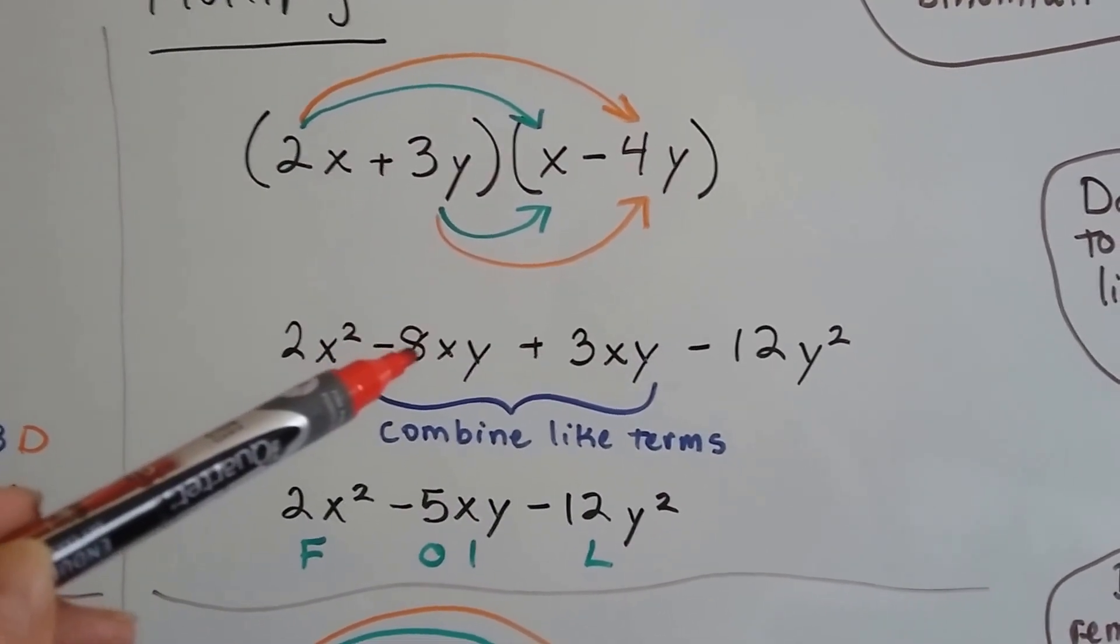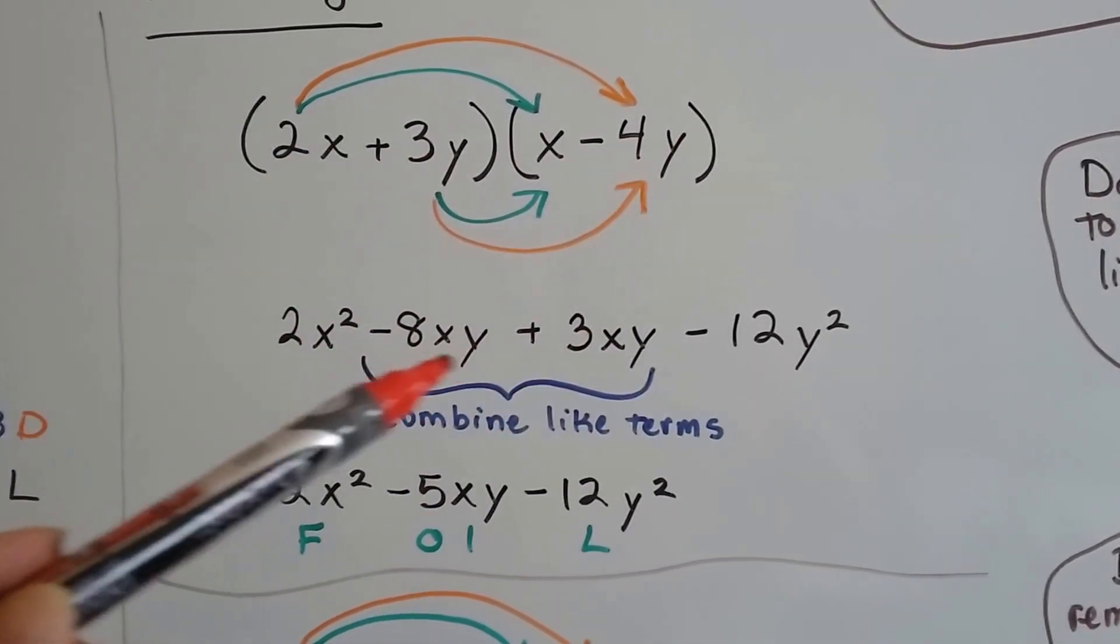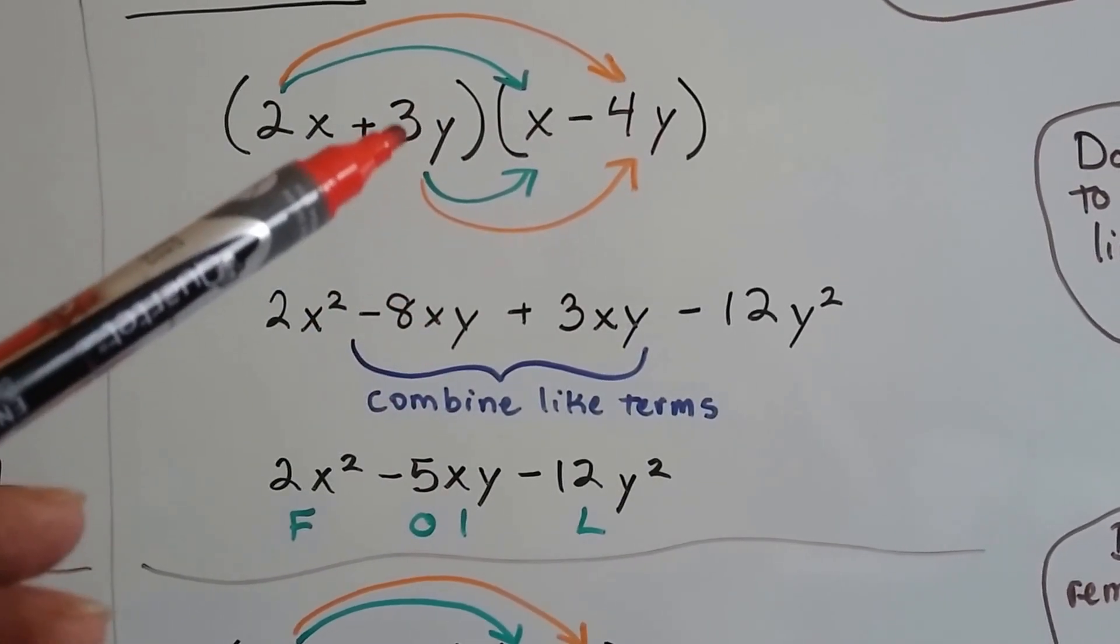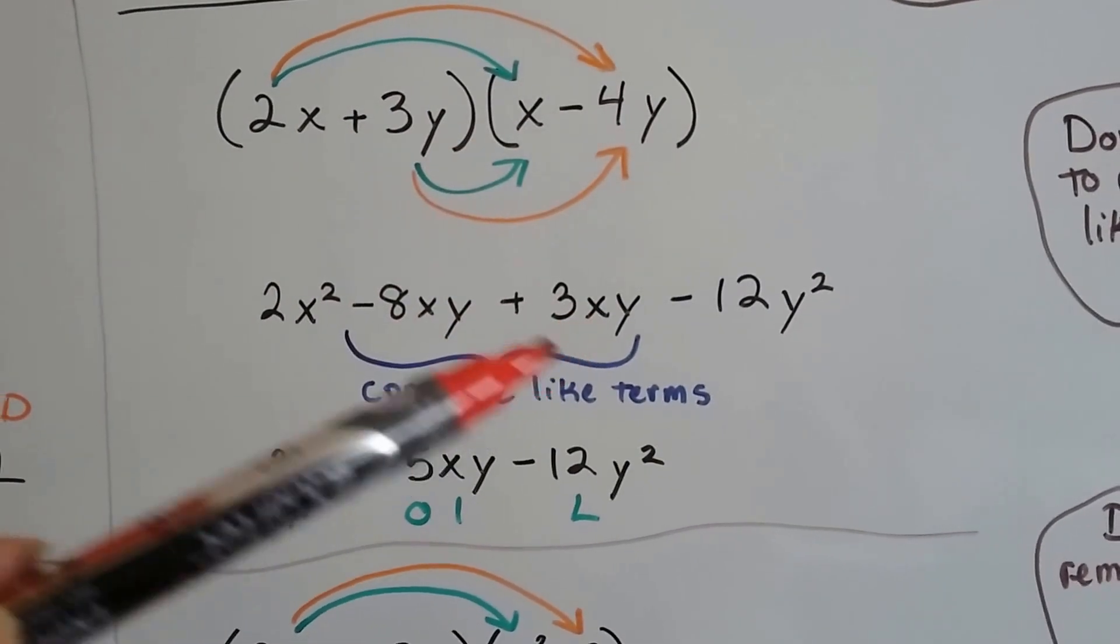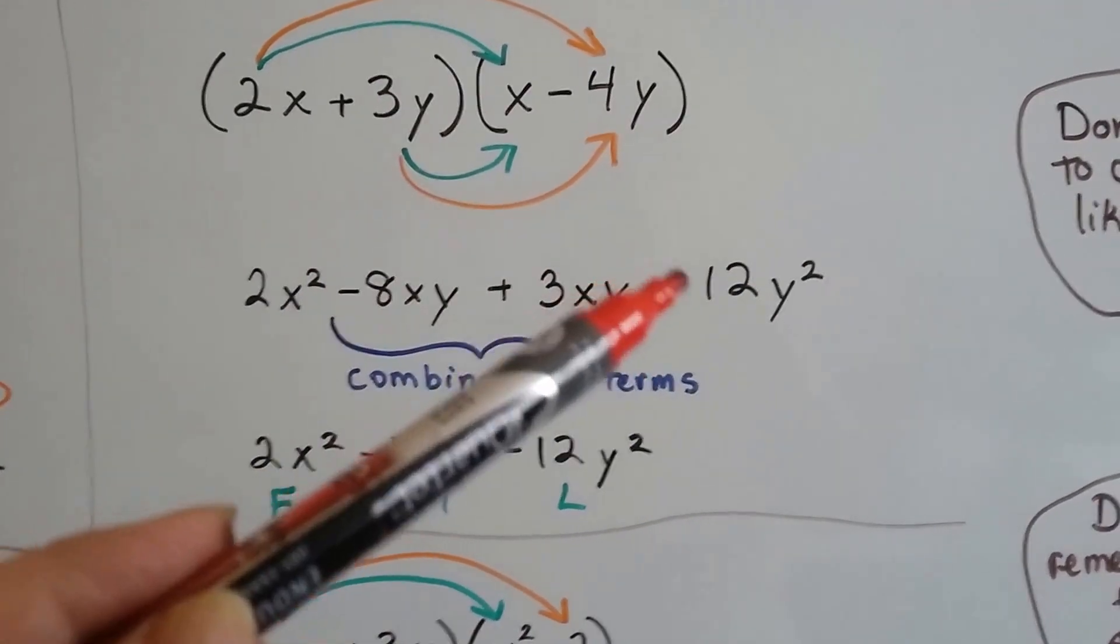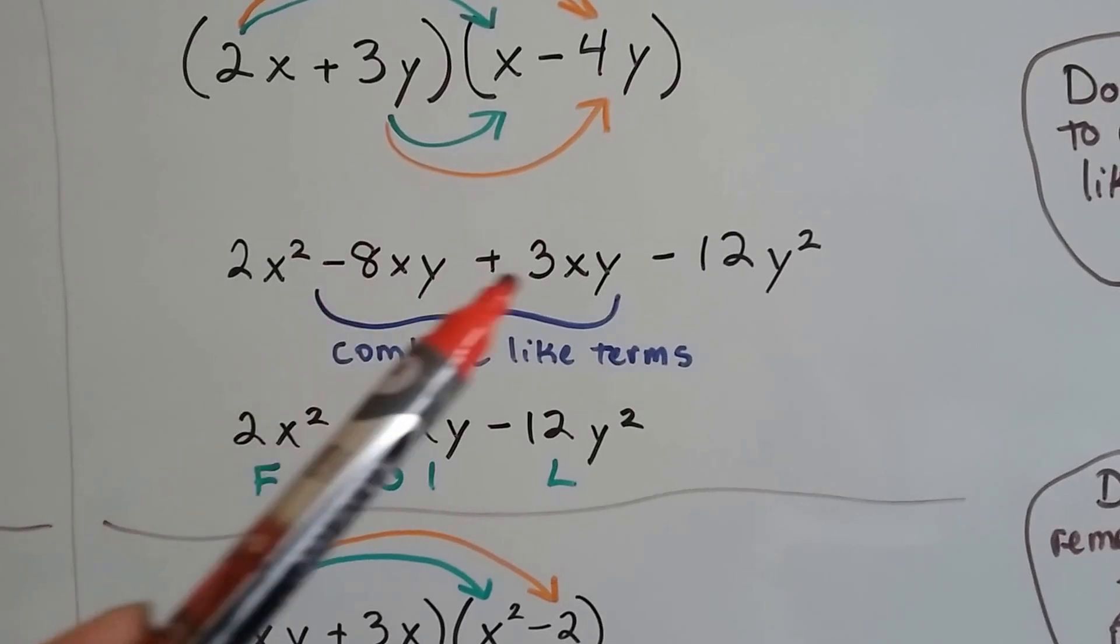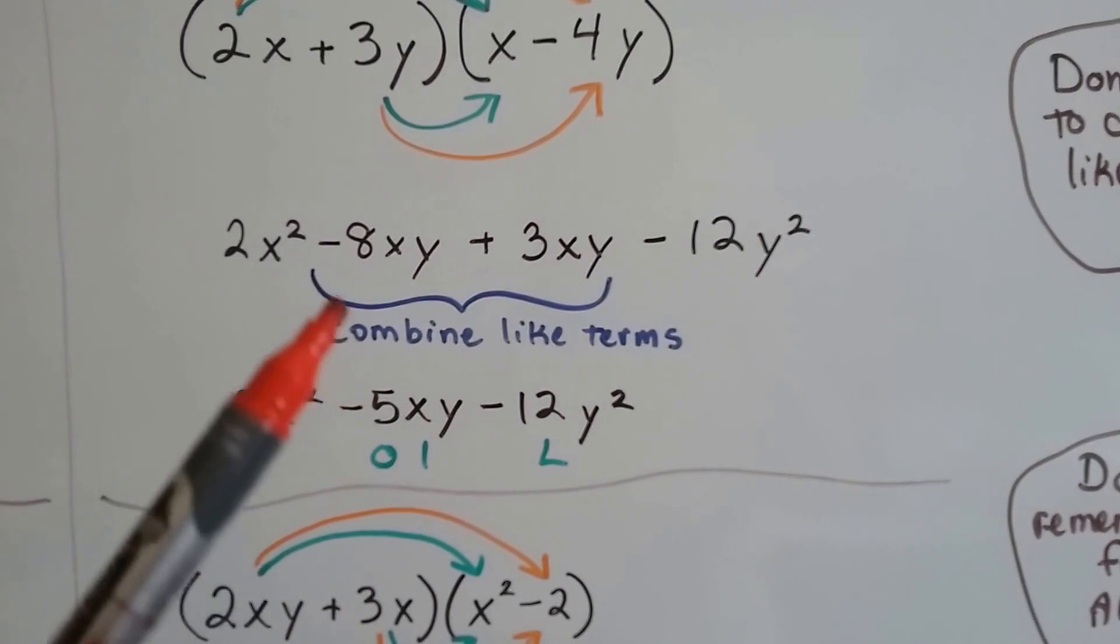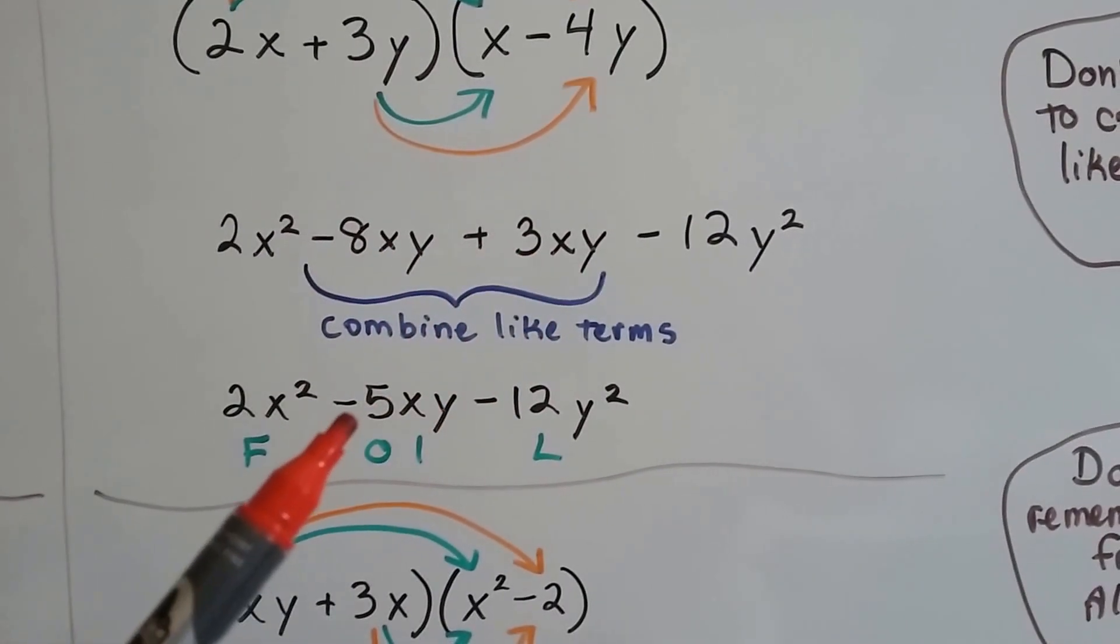That's going to give us a negative 8xy. There's 1x and 1y. We put them together. 2 times a negative 4 is the negative 8. Now we're going to do the two inside ones. We've got a 3y and an x. That's going to give us a 3xy. We're going to do the last one, 3y and negative 4y makes a negative 12y squared because we have two y's. But we have these two terms that are like terms so we need to combine them. And a negative 8xy plus 3xy gives us a negative 5xy.